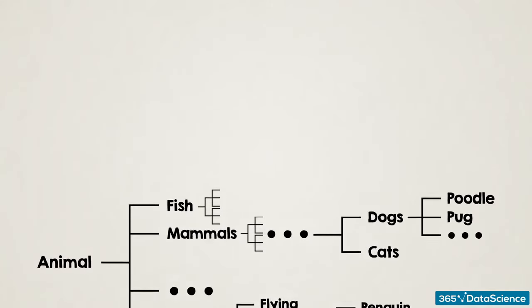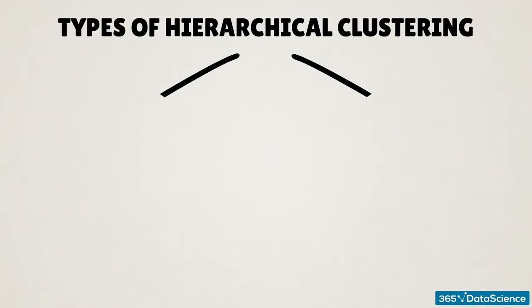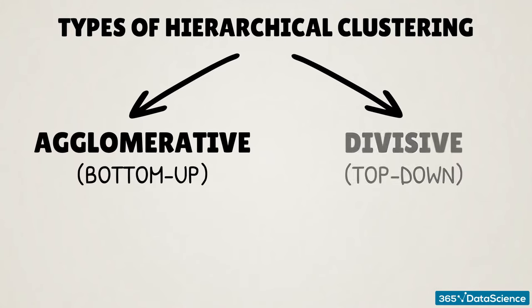There are two types of hierarchical clustering: agglomerative, or bottom-up, and divisive, or top-down.